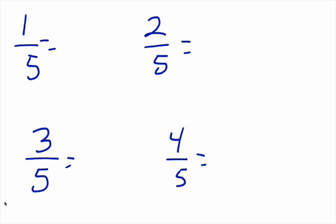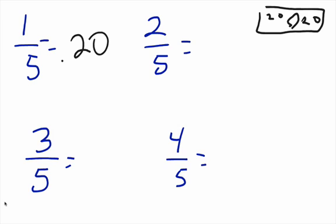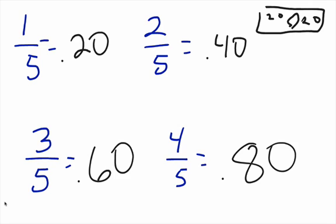Now we have the 5s. When we have a denominator of 5, think about counting by 20s — like a $20 bill. 1 over 5 is 0.20, 2 over 5 is 0.40, 3 over 5 is 0.60, and 4 over 5 is 0.80. How many $20 bills are in $100? Five. So count by 20s.